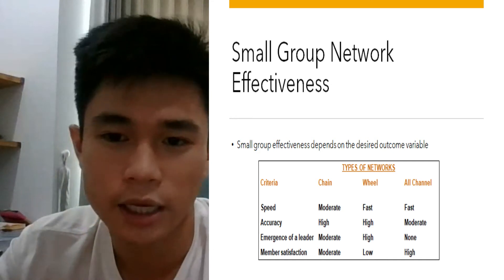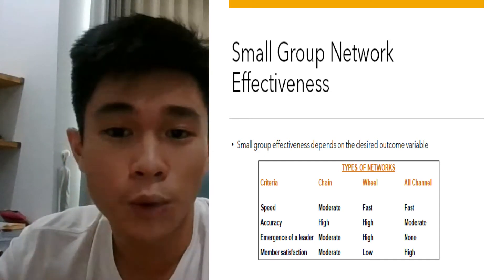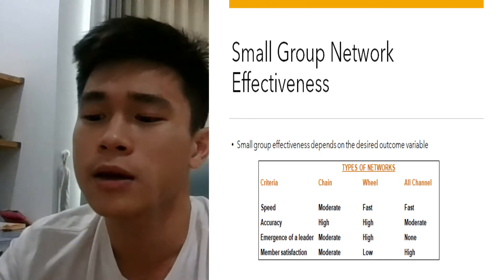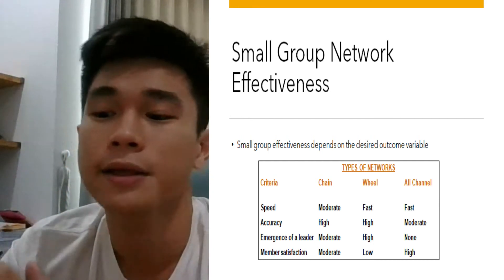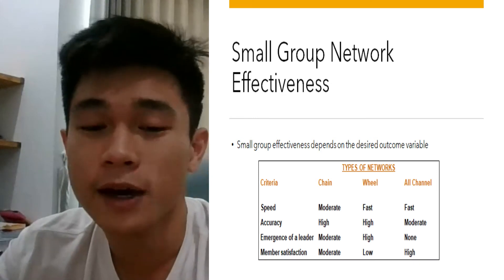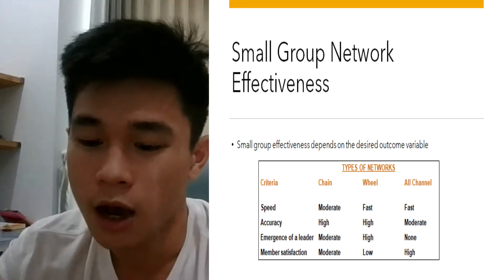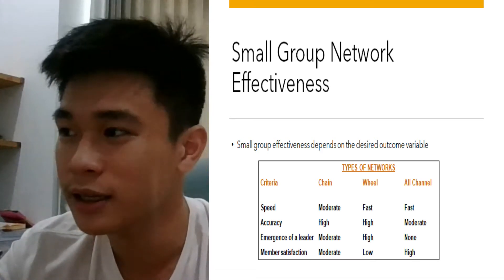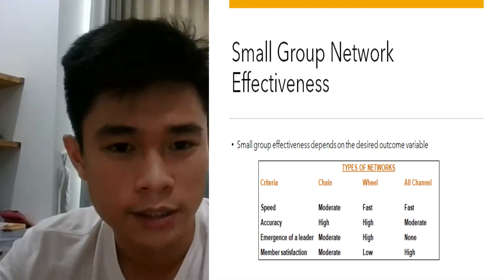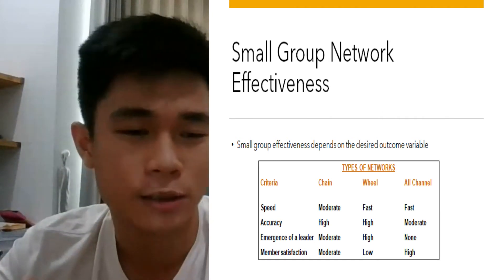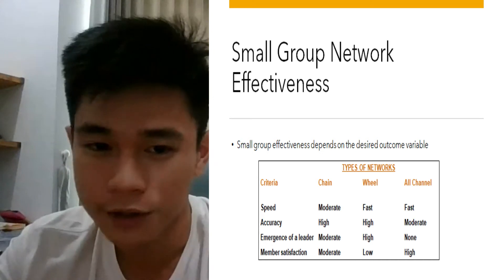Regarding accuracy, chains is high, wheel is high, and all channels is moderate. The emergence of a leader is high for the wheel type, because all information and decisions are made by the leader. Member satisfaction in the wheel is low, because all decisions are made by the leader. If you are a member, your ideas don't get to influence the final decision, which is very unsatisfying.